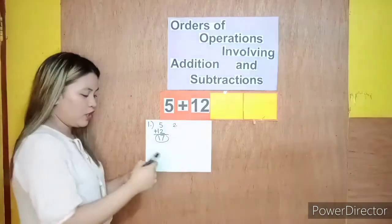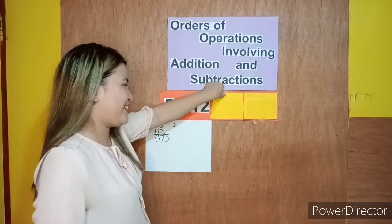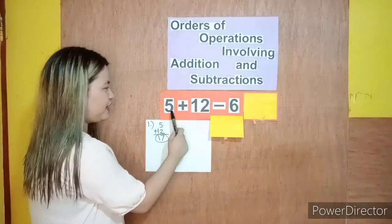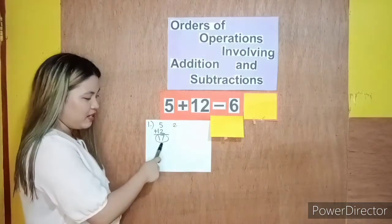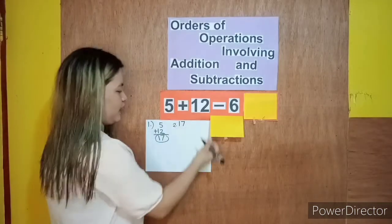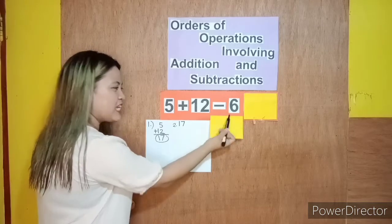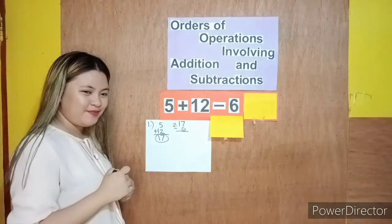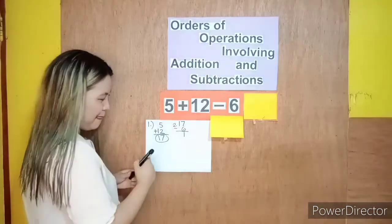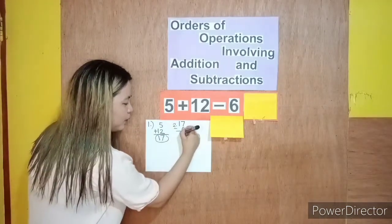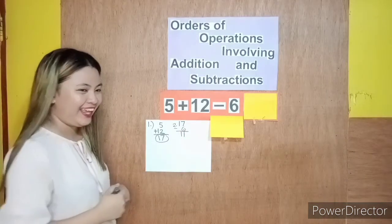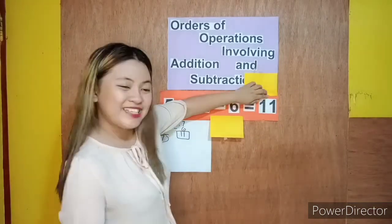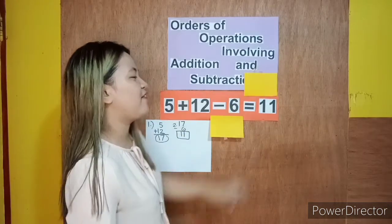Since we're done with our addition, let's proceed to the second operation — subtraction. The sum of 5 and 12 is 17. So after that, we have 17 minus 6. So we have 7 minus 6, which is 1. Since there is no number below it, we bring down 1. So our final answer is 11. We have 11 as our answer.